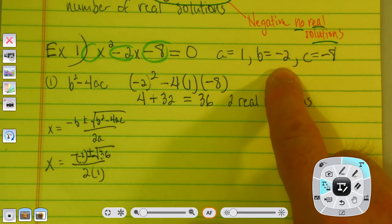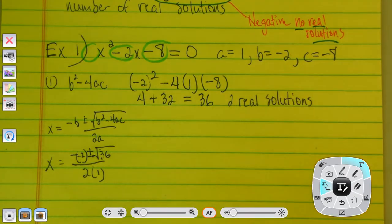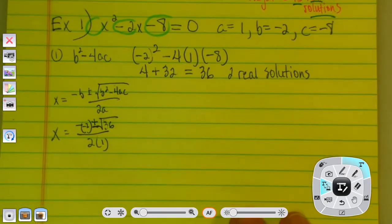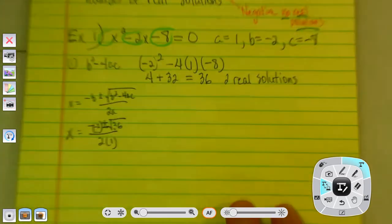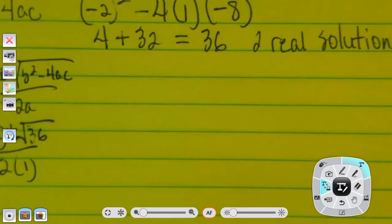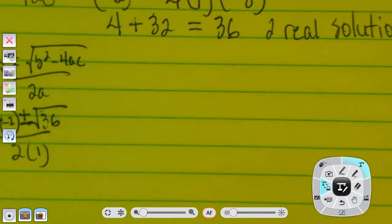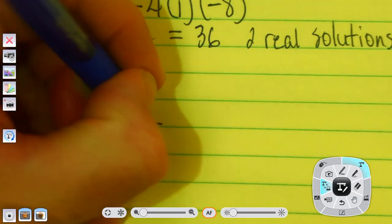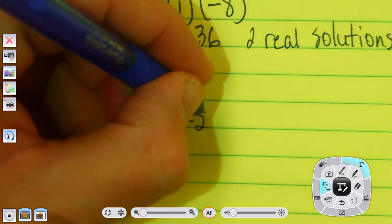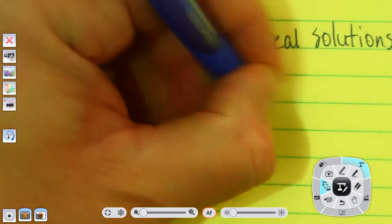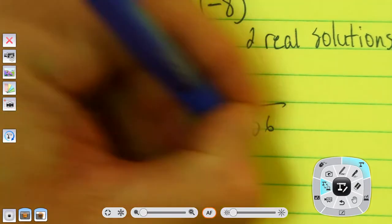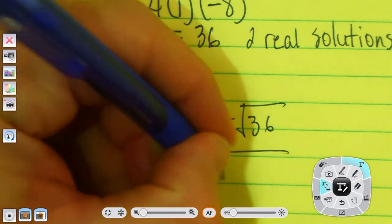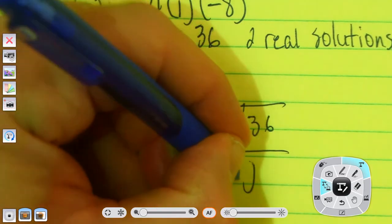So, b was negative 2. Write that a little cleaner. That's a little hard to see. So, it turns out to be a negative negative 2 plus or minus the square root of 36 over 2 times 1.